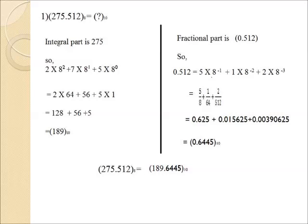Now we look at the fractional part: 0.512. Multiplying with negative powers of 8 gives 5 into 8⁻¹, plus 1 into 8⁻², plus 2 into 8⁻³, which is 5/8 plus 1/64 plus 2/512. The result is 0.6445 to the base 10, which is the equivalent decimal fractional part.